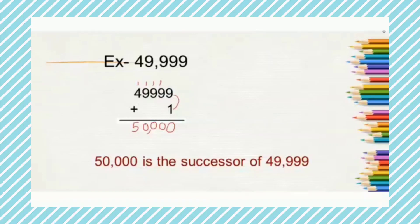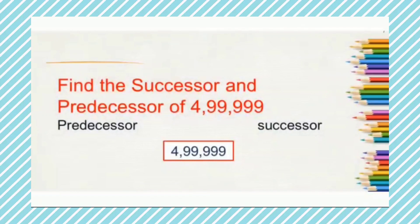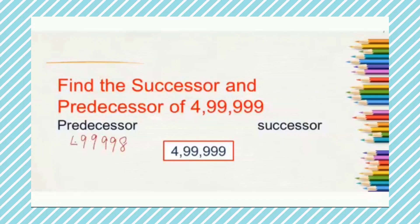Now, can you tell me the answer for this? Find the successor and the predecessor of 4,99,999. Predecessor means we subtract 1. At the ones place it is 9, so 9 minus 1 is 8, and the rest of the numbers remain the same. So the predecessor of 4,99,999 is 4,99,998.